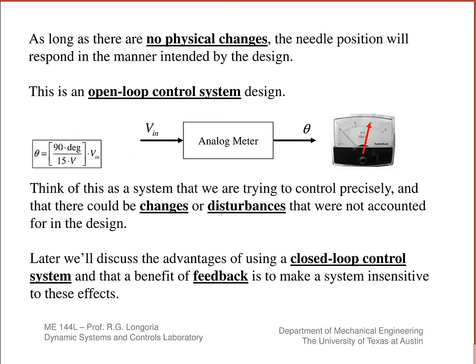If you think about it, it's a very simple device designed to work precisely this way. It's a measurement of voltage that's indicated by this needle position. As long as there are no physical changes, the needle position is always going to respond the way you intend. Because we're going to be using this system to talk about control, we're going to refer to this as an open loop control design. In other words, we would like to get a certain position. What's the voltage that we need to get there? By sizing the parameters in this meter, we can determine what that relationship is. So it's a very simple way to predict what the voltage should be to give you a certain deflection.